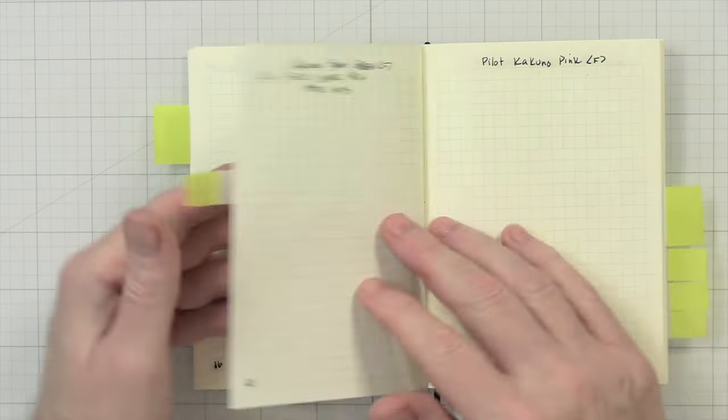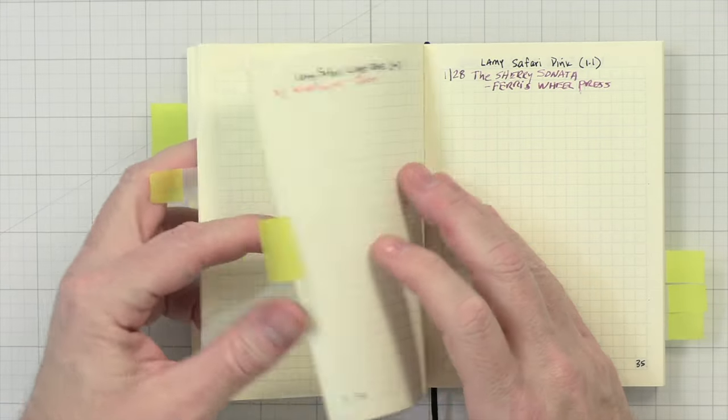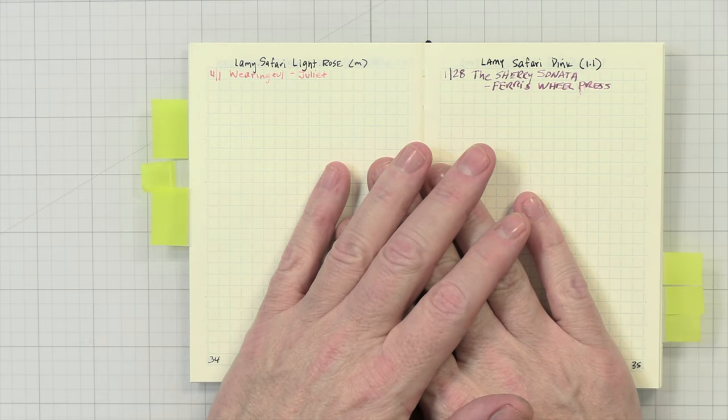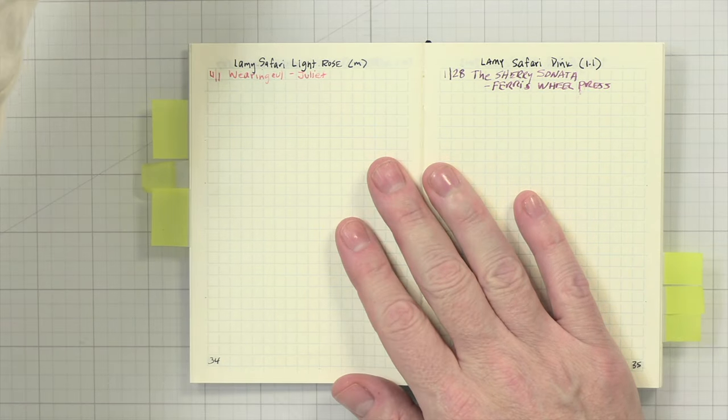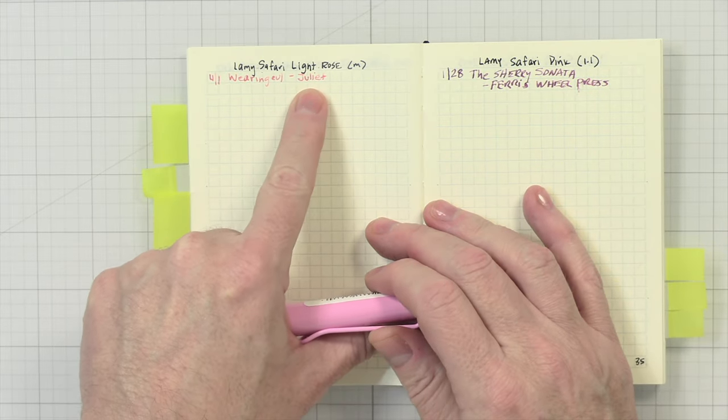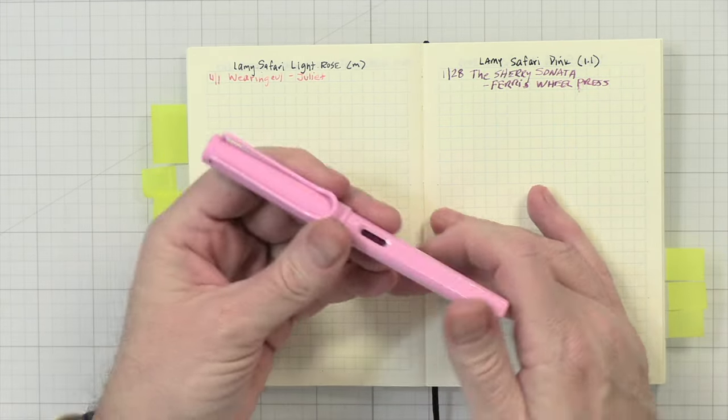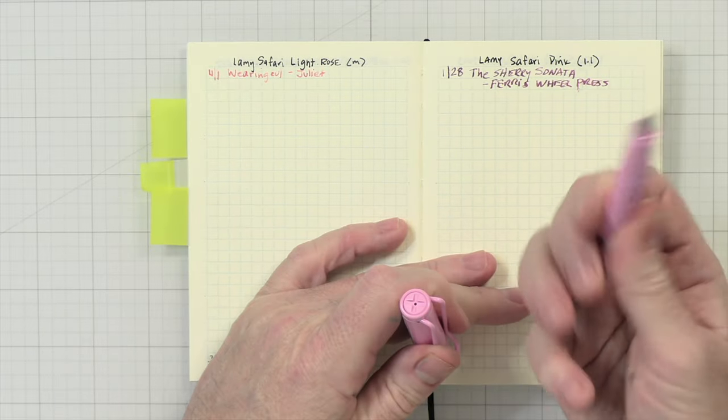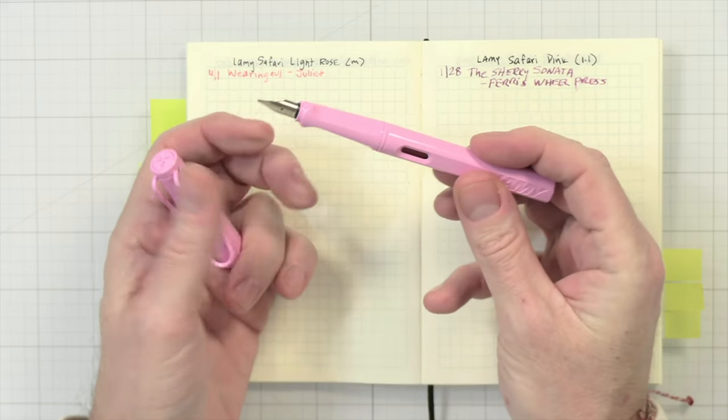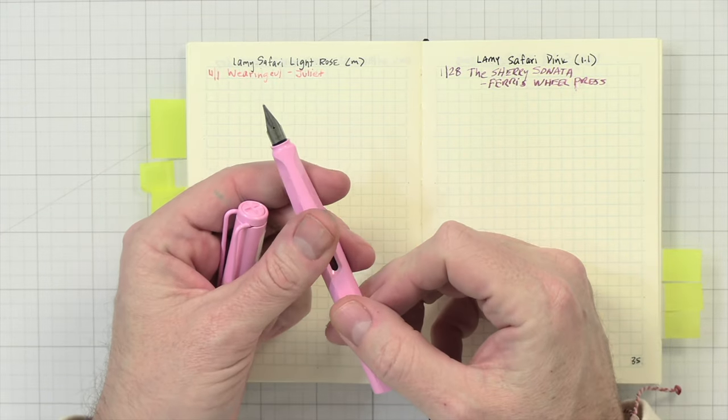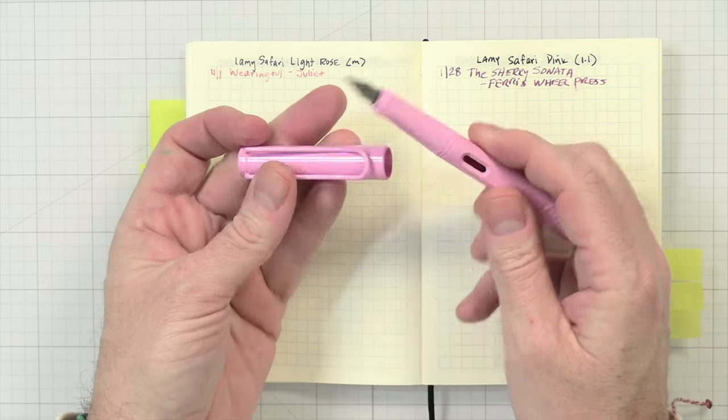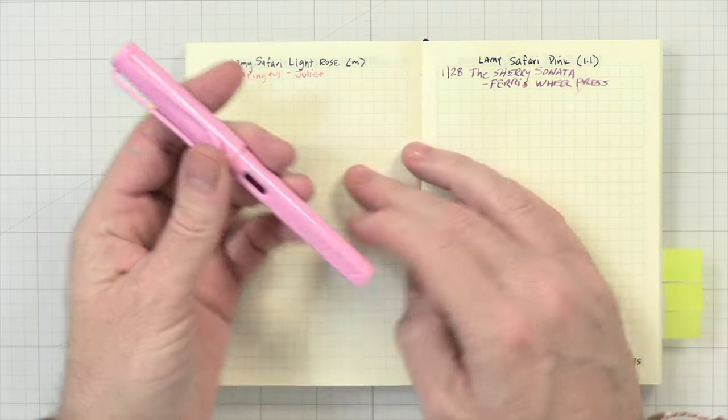Up next, we have my Lamy Safari Light Rose, which is this pen here. And then I have that inked up with Wearingall Juliet. This has a shimmer in it. It's a pink. It's really pretty. And I like these pens because you can see how much ink is in your pen. This is a medium point pen, and I thought just having a pink would be really nice this month.